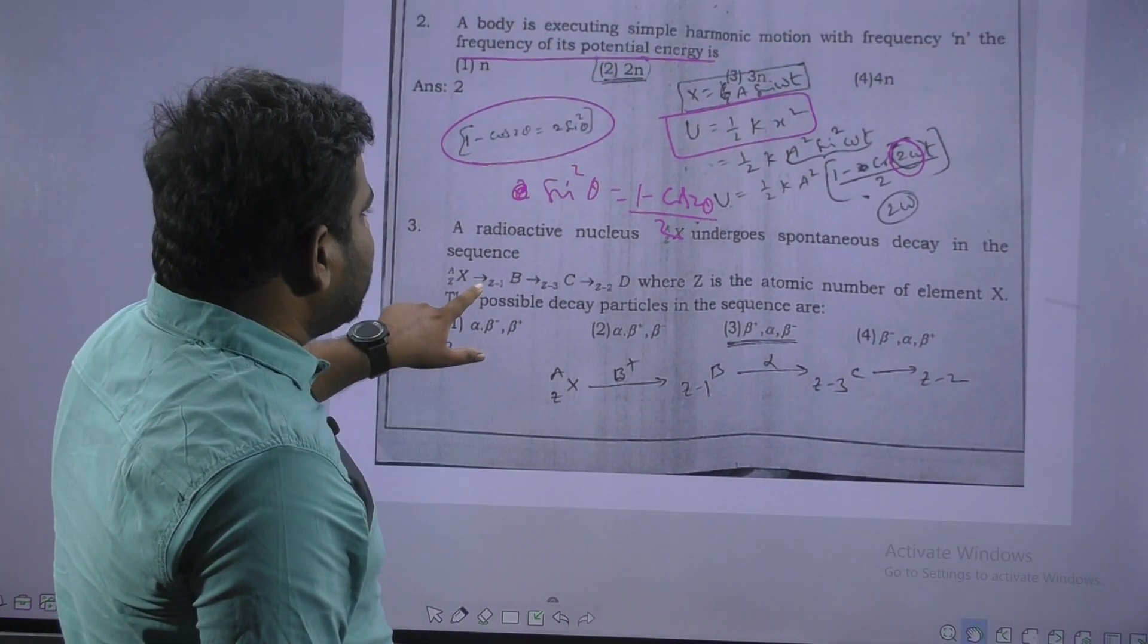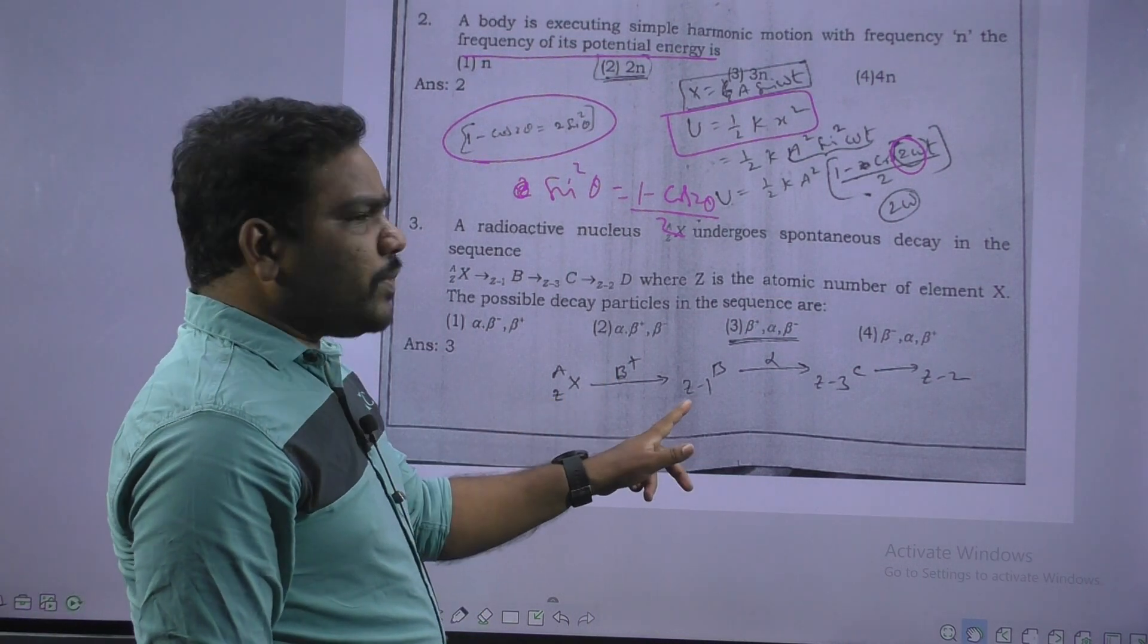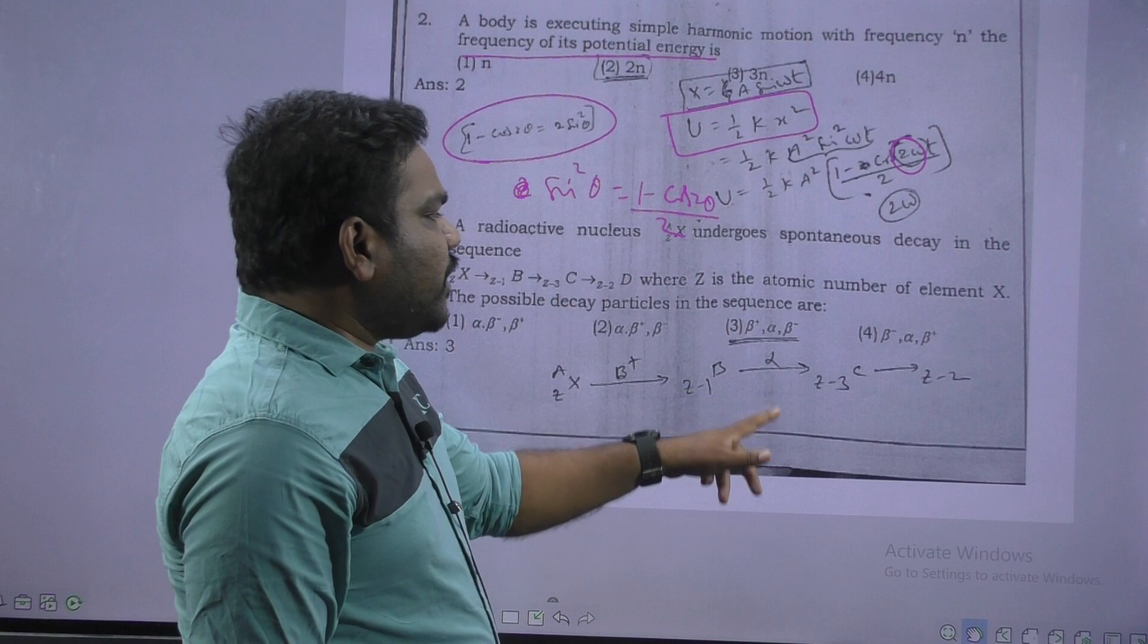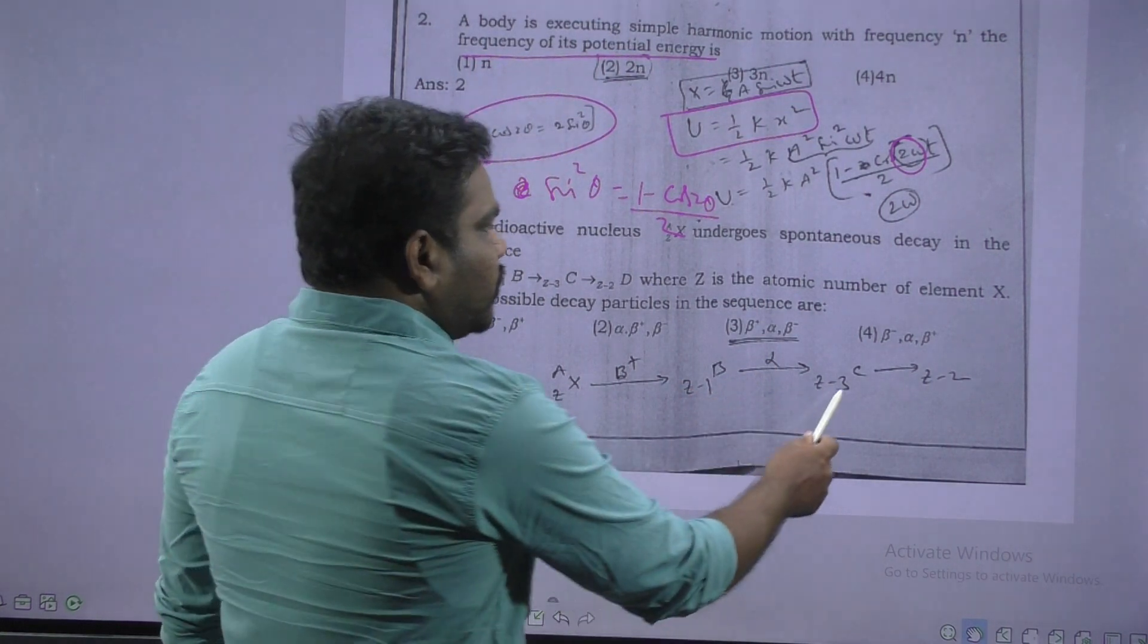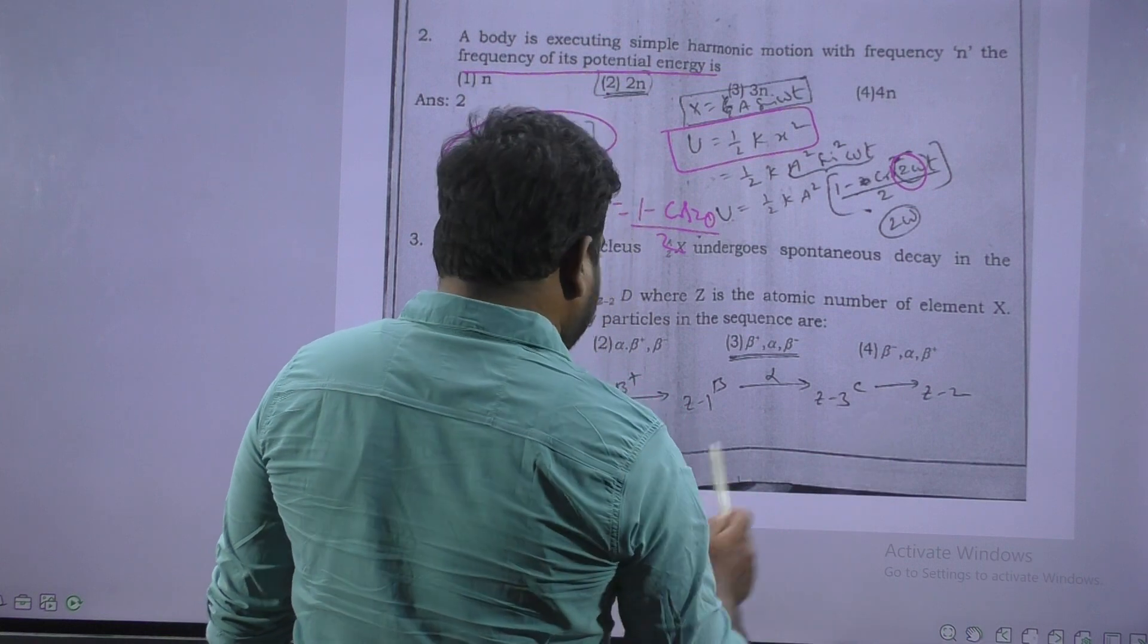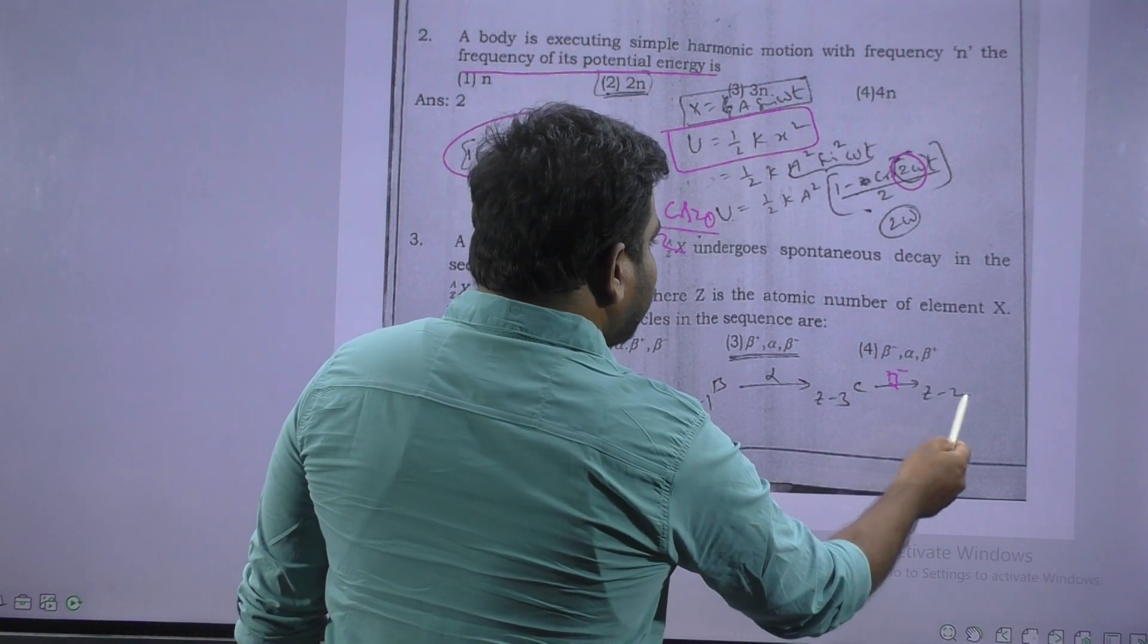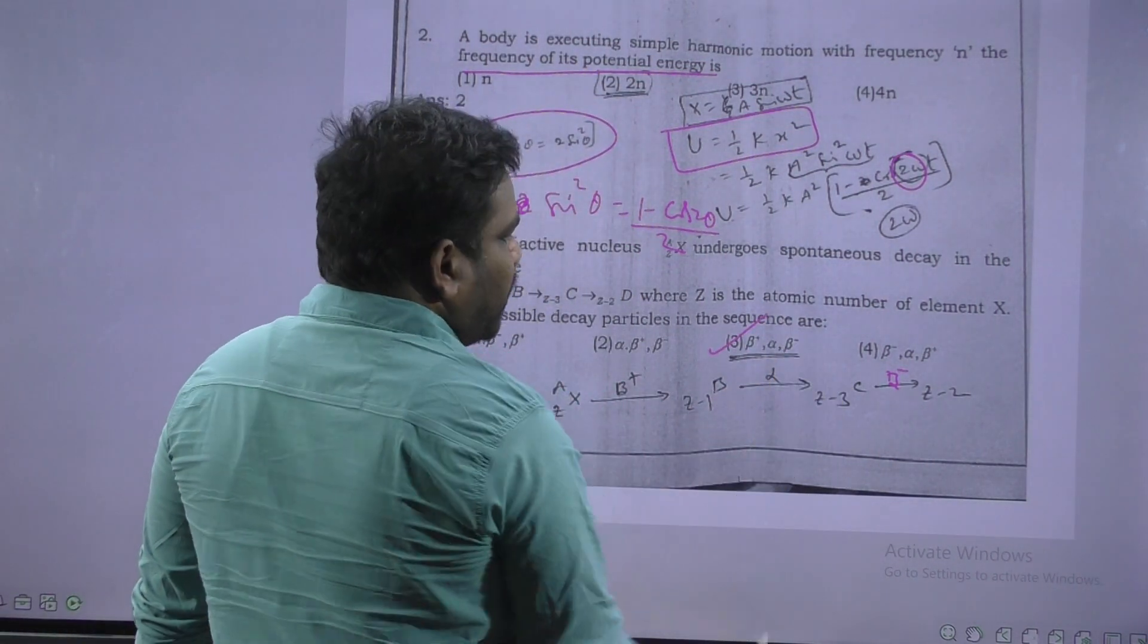Next question. This is from radioactivity. Z, beta plus release, that's why Z minus 1. Alpha release, that's why atomic number decreases by 2 units, Z minus 3. So again beta plus release here. Beta plus, beta minus, that's why Z minus 2. So option 3 is correct.